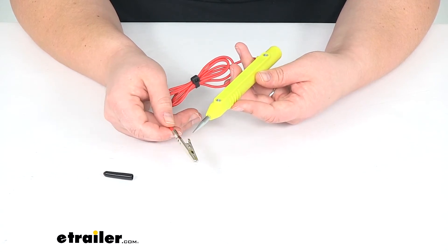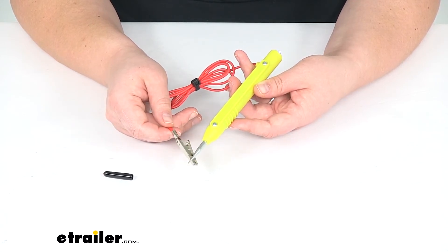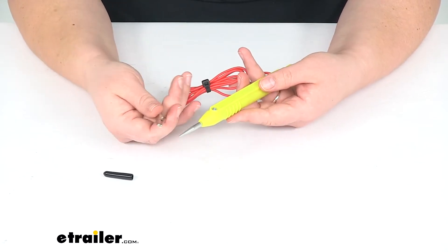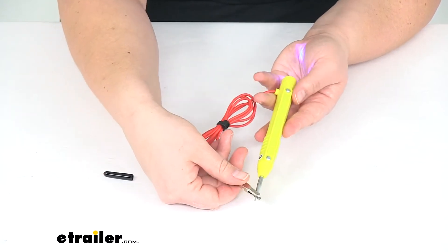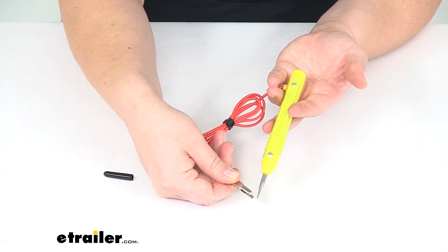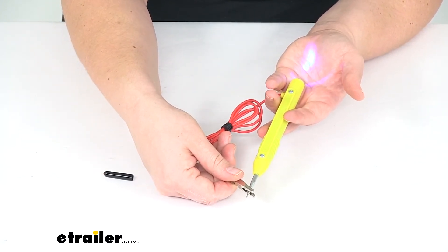But if you touch the two ends together, the light will turn on at the back, letting us know that our battery is still good. So it might be a little hard for you to see, but there's a little blue light that comes on to let us know that our battery's still working properly.